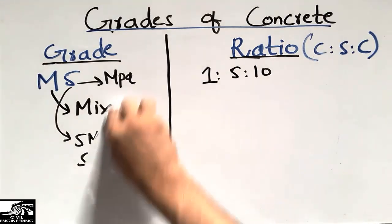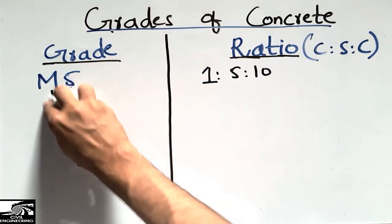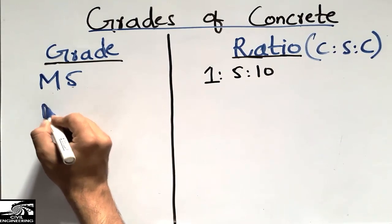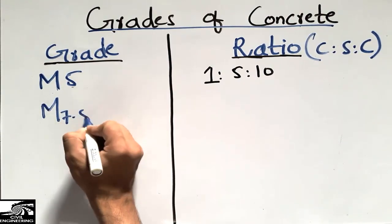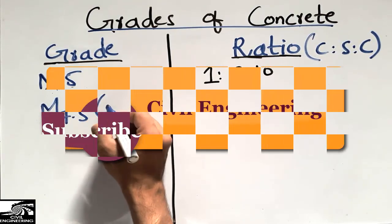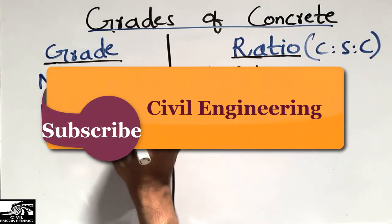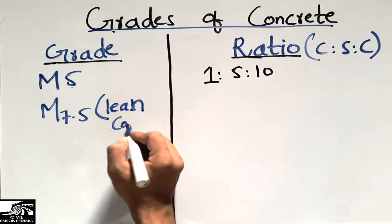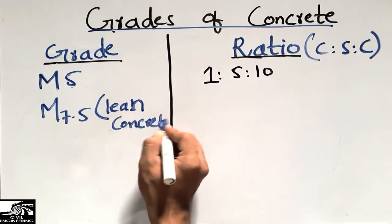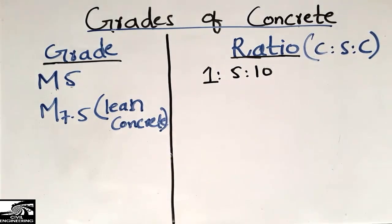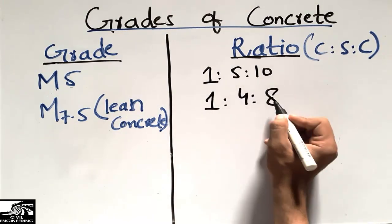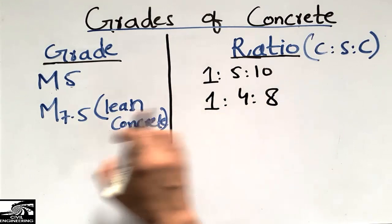The second grade is M7.5. This is also called lean concrete. We mostly use this type of concrete as lean concrete. The ratio for M7.5 is 1:4:8.